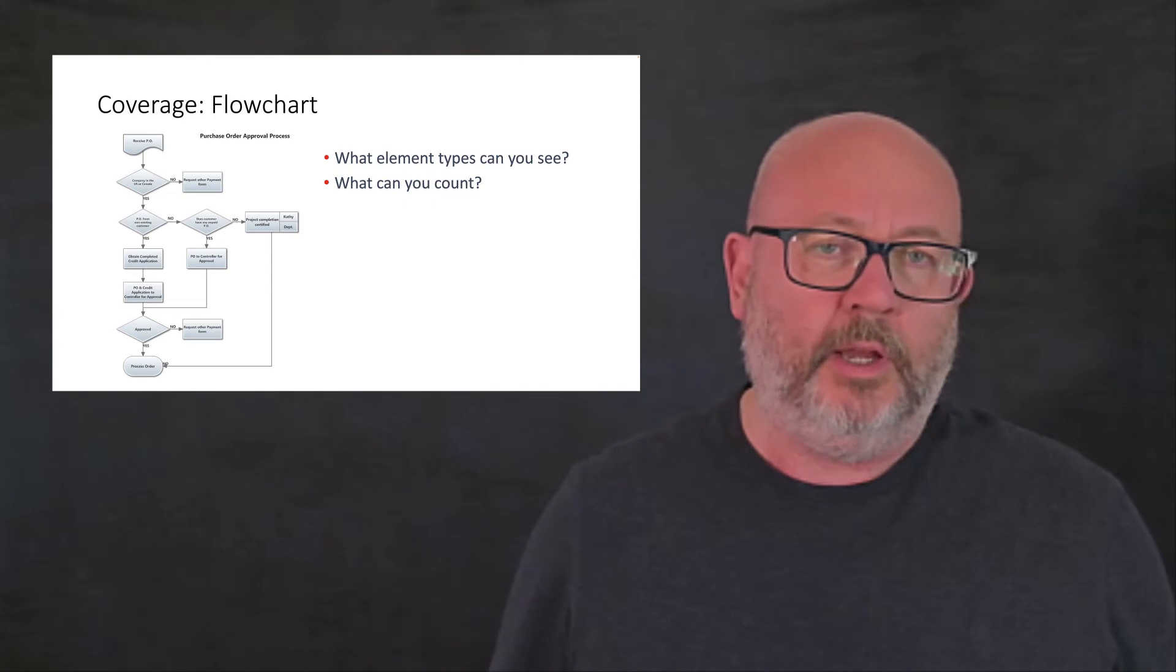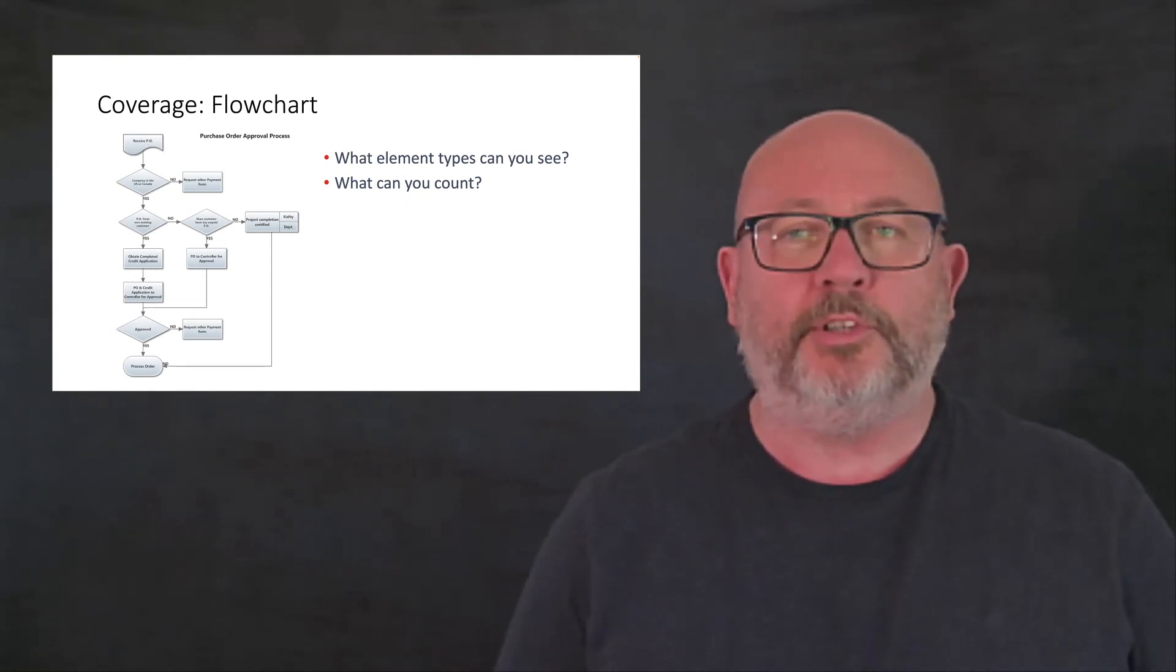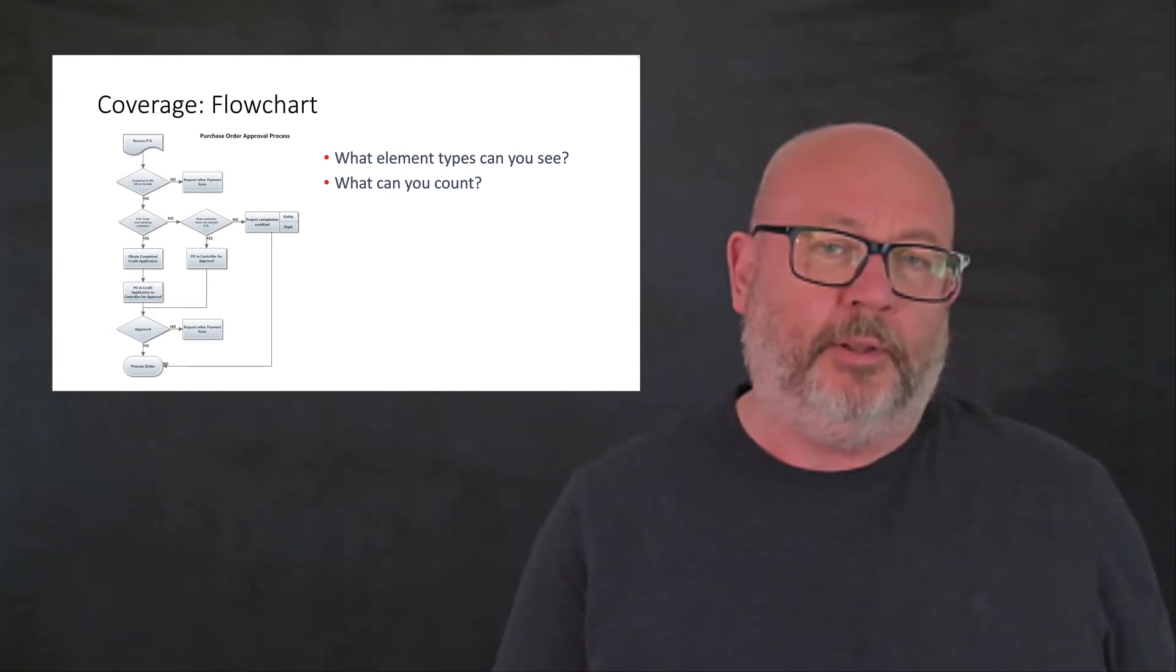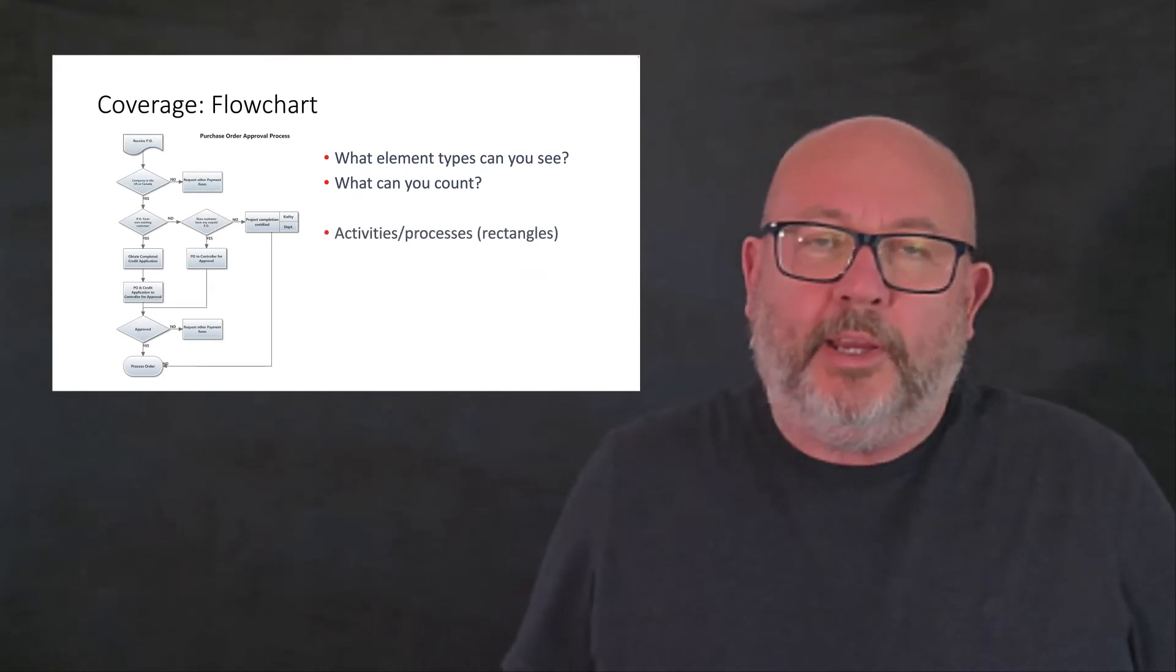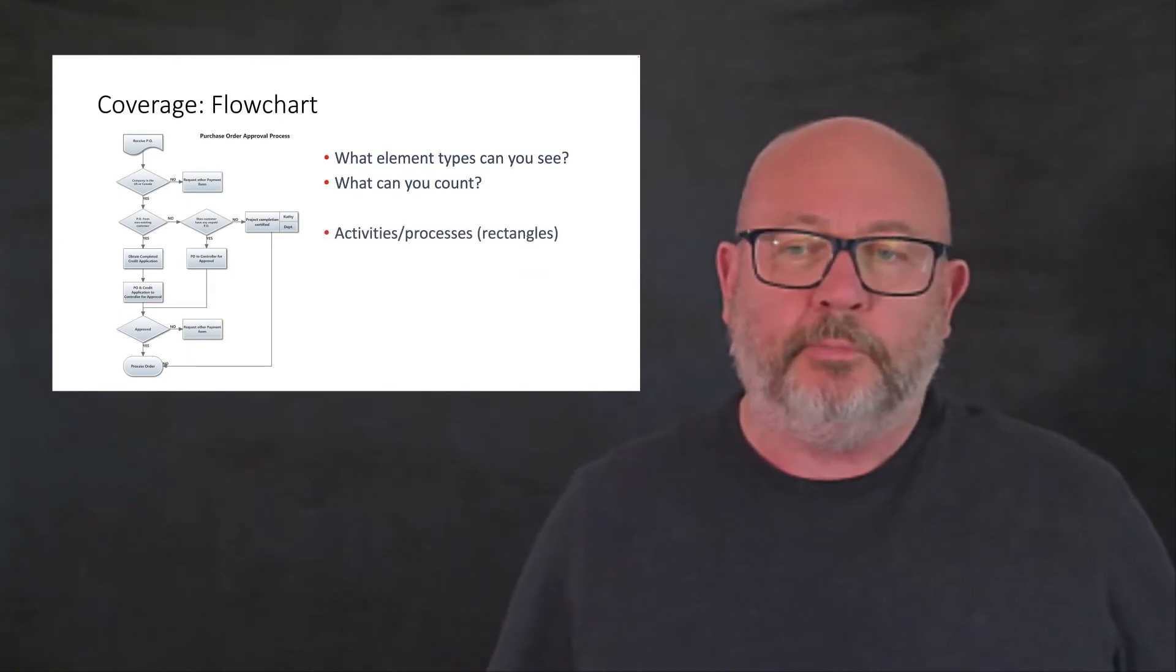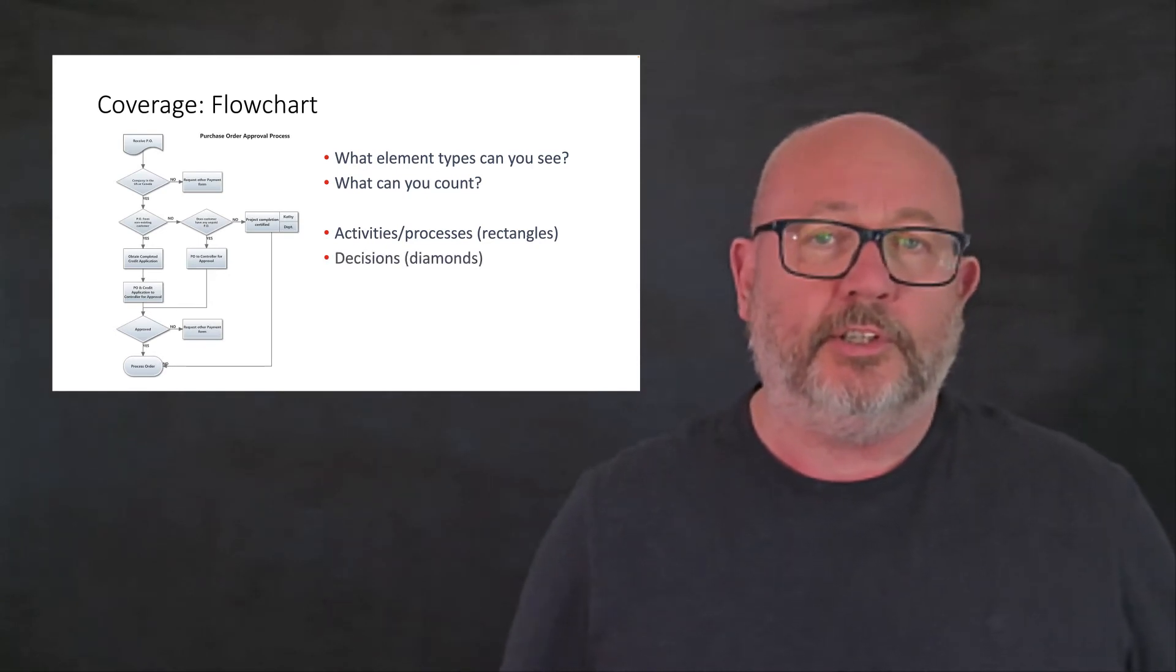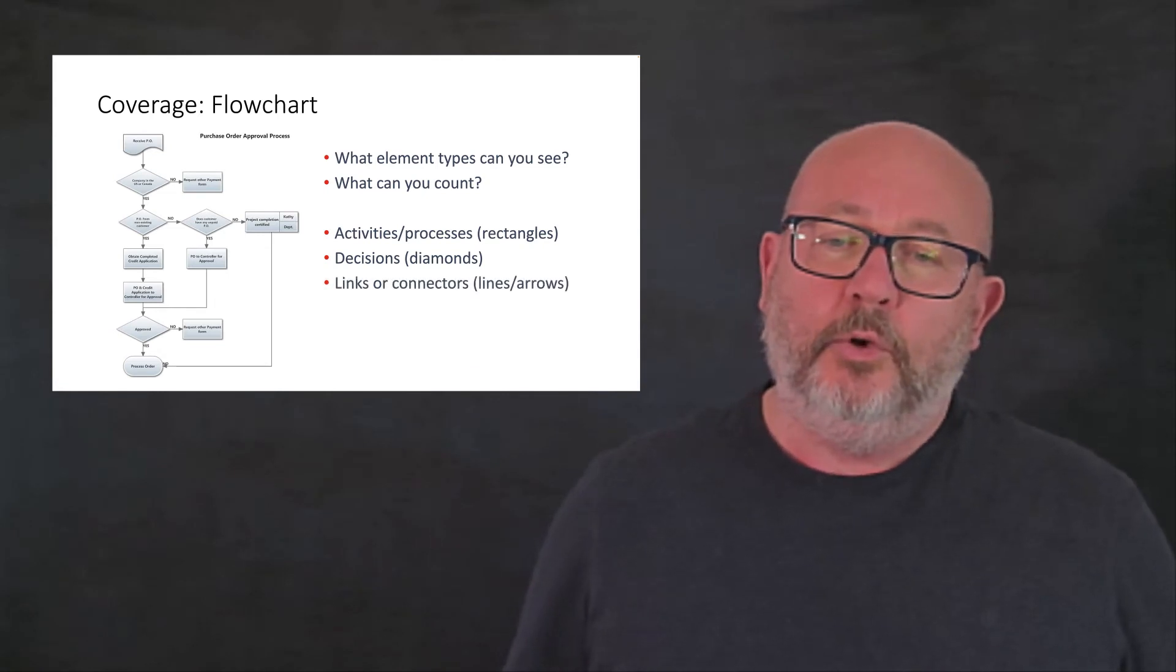Another model we might use could be a flowchart and this might be a flowchart that represents the business process, let's say. What element types can you see in this model? What can we count in this model? Sure, we can look at activities or processes, you know, the rectangles in the diagram.